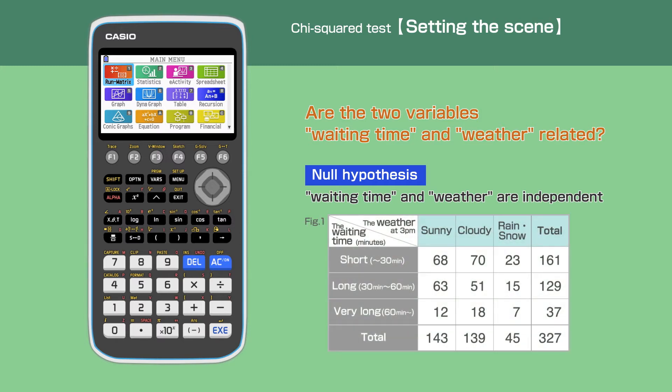In order to test this, we have collected the following information. The data is taken between 1 January and 31 December 2019. All the data is taken at 3 pm each day. The weather is divided into 3 categories: sunny, cloudy, rain or snow.